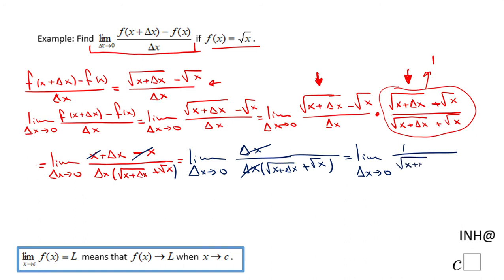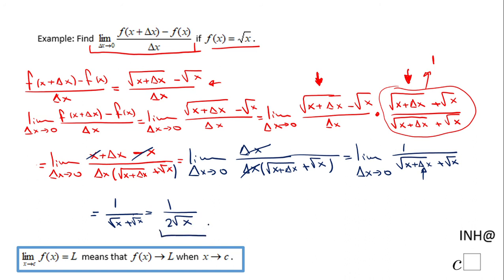At this point we can replace delta x with zero, and we get one over square root of x plus square root of x, which gives us the final form of this limit: one over two square root of x.